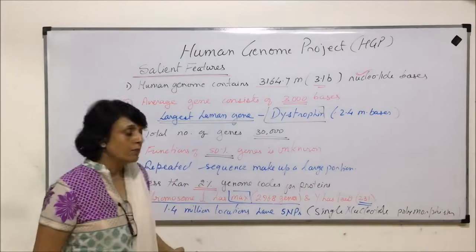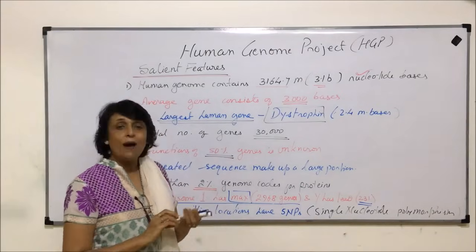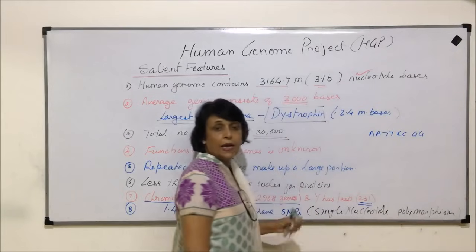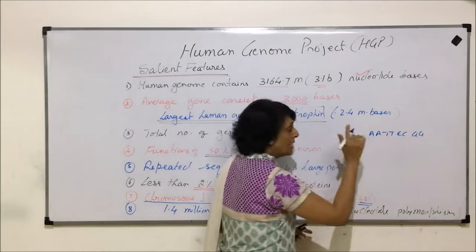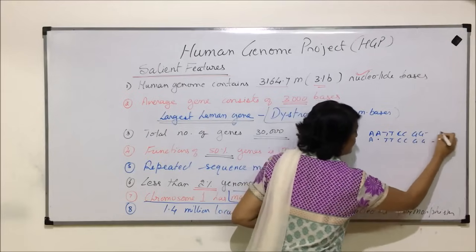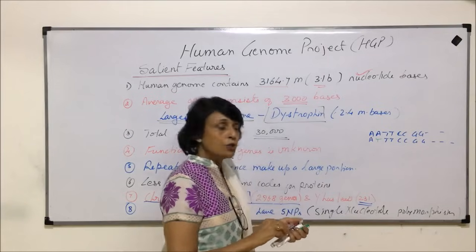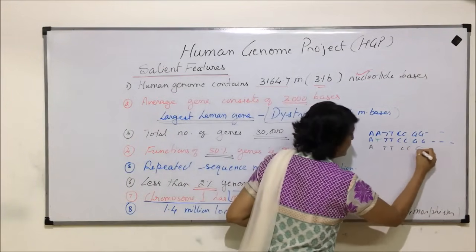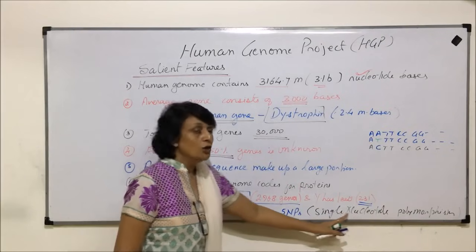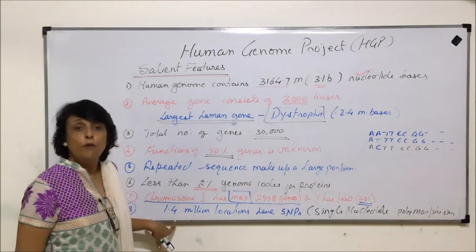SNPs are Single Nucleotide Polymorphisms. Polymorphism means multiple forms, and these multiple forms are due to just one nucleotide difference. For example, a sequence A-A-T-T-C-C-G-G in one individual may differ from another individual at only one nucleotide position — that single nucleotide difference at the same location across individuals is called a Single Nucleotide Polymorphism.